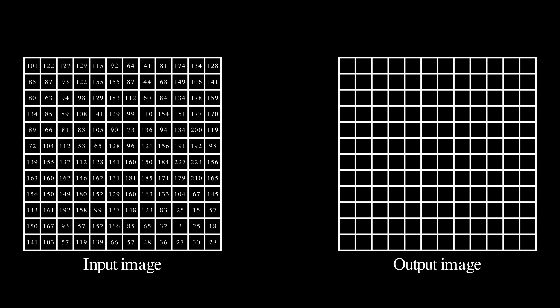So given this input image, how do we blur it? A simple approach is to average the intensity values in a small neighborhood. Here is how it works.